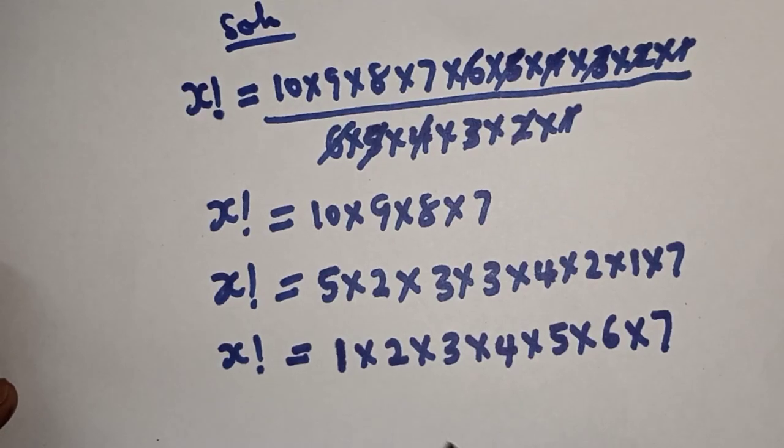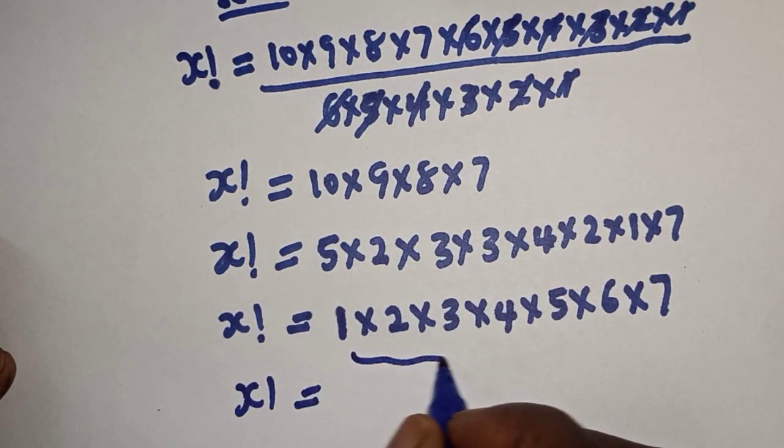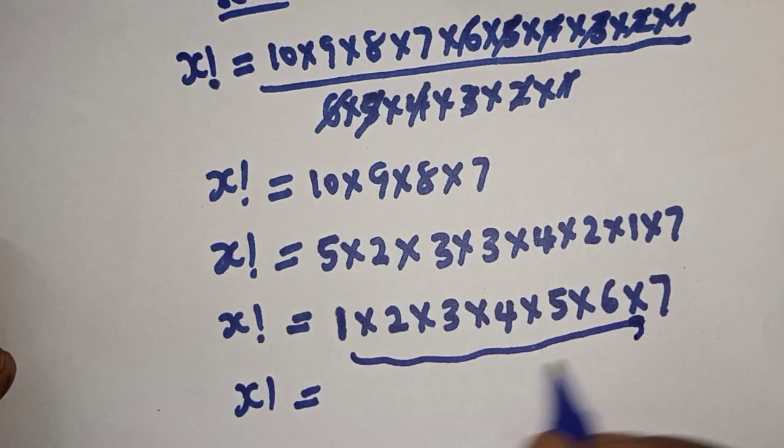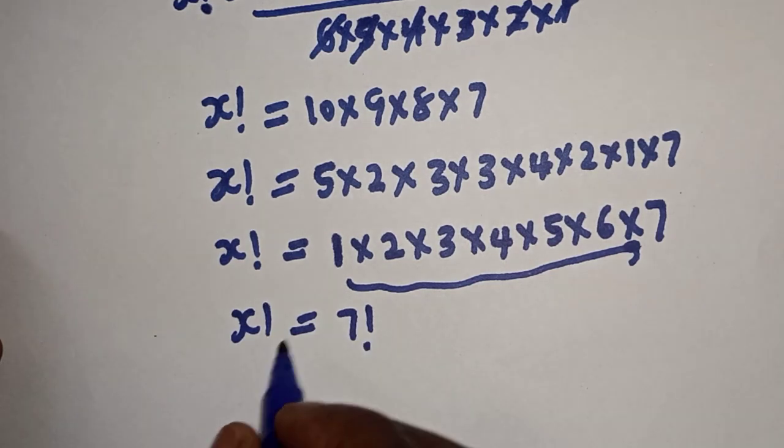x factorial is equal to the whole of this, from here is 7 factorial. Then factorial we cancel this factorial.